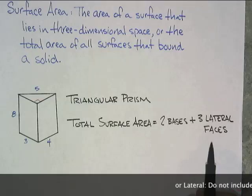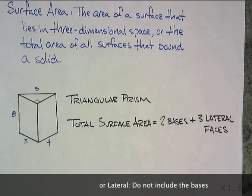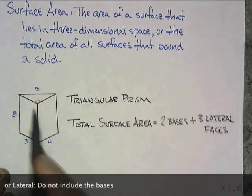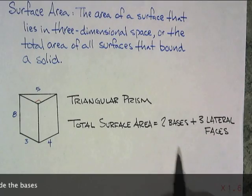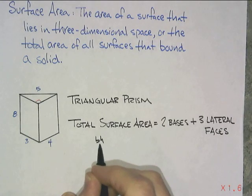And the word lateral comes from Latin. It means situated at or extending to the side. So we're talking about those are our lateral faces and the two bases are the ones that are the triangles. The two bases of course would be just base times height divided by two.